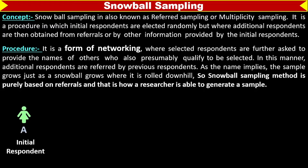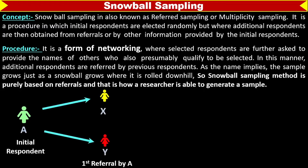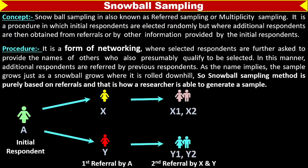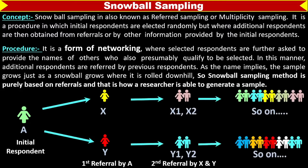For example, there is an initial respondent A, and A has referred two names: X and Y. This is the first referral by A. Then in the second referral, X has referred two names X1 and X2, and Y has also referred two names Y1 and Y2. In the same way, X1 and X2 have also referred other names, and Y1 and Y2 have also referred other names, and this process will go on.